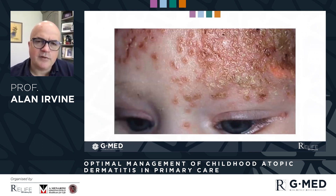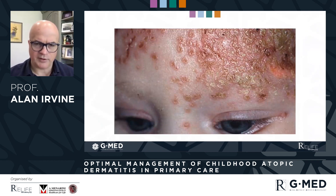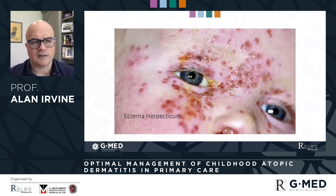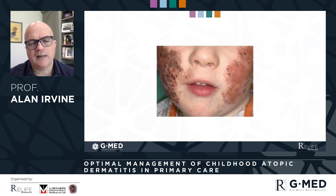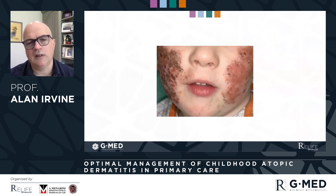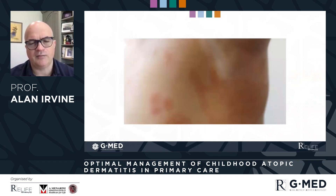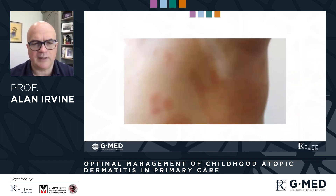This is eczema herpeticum — you need to be aware of this. This patient needs to be referred to hospital for treatment. Here is another eczema herpeticum encroaching on the eye. These are medical emergencies. This is impetigo, which you can treat with oral antibiotics yourself. Be aware of infection, including fungal infection, which can again be treated in primary care without necessarily requiring hospital input.